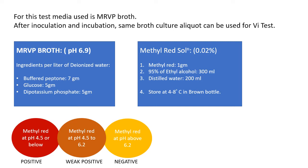The media used for this test is MR-VP broth. From the name itself, the same broth is used for both the Methyl Red test and the VP (Voges-Proskauer) test. After inoculation and incubation, the same broth culture can be divided into two test tubes to proceed for MR and VP simultaneously. MR-VP broth has a pH of 6.9 ± 0.2, with ingredients: buffered peptone, glucose, and di-potassium phosphate.